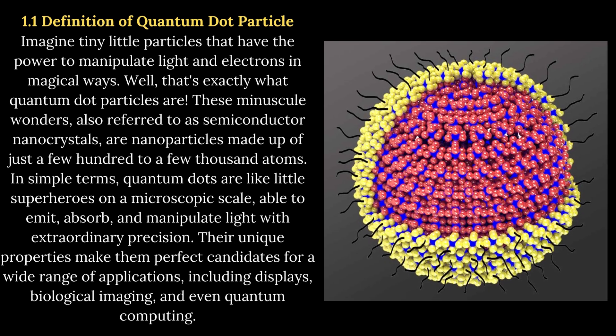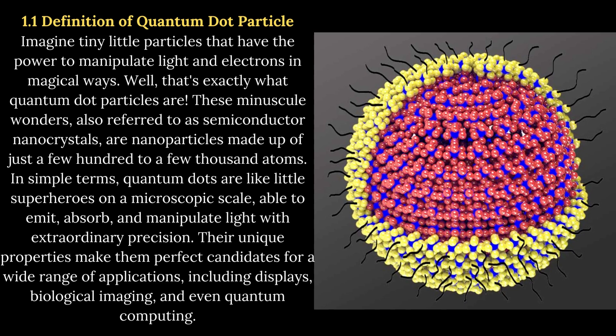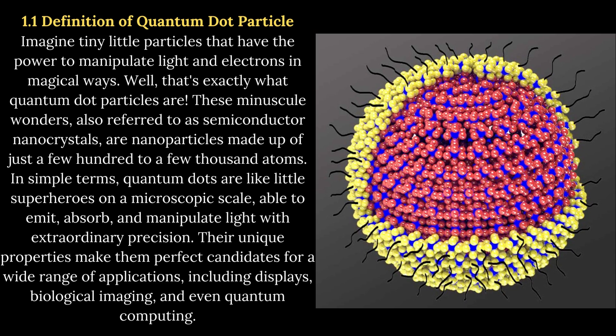1.1 Definition of Quantum Particle. Imagine tiny little particles that have the power to manipulate light and electrons in magical ways — that's exactly what quantum particles are. These minuscule wonders, also referred to as semiconductor nanocrystals, are nanoparticles made up of just a few hundred to a few thousand atoms. In simple terms, quantum dots are like little superheroes on a microscopic scale, able to emit, absorb, and manipulate light with extraordinary precision. Their unique properties make them perfect candidates for a wide range of applications, including displays, biological imaging, and even quantum computing.